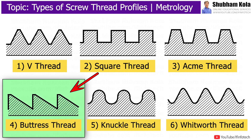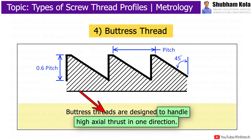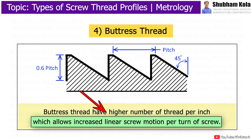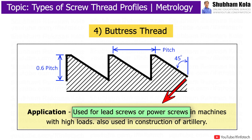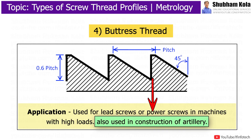Next is buttress thread, which is designed to handle high axial thrust in one direction. It also has a higher number of threads per inch, which allows increased linear screw motion per turn of the screw. Buttress threads are used for lead screws or power screws in machines with high loads, and are also used in the construction of artillery.